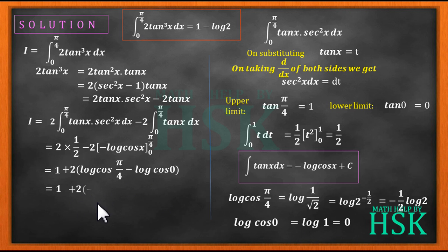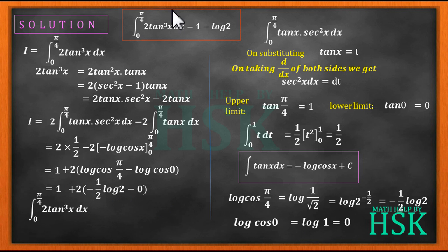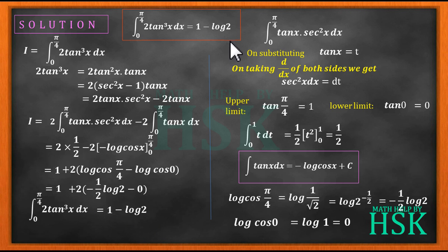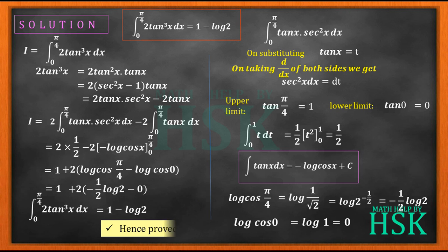Placing all values together, I get 1 + 2 × (-1/2) log 2 - 0. The 2 and 1/2 cancel out, and the value becomes 1 - log 2. Therefore, the value of this definite integral is equal to 1 - log 2, which is what we had to prove.